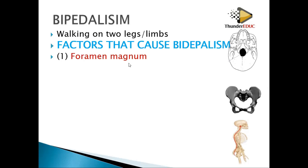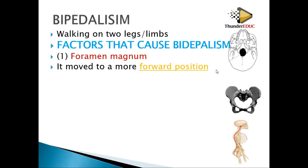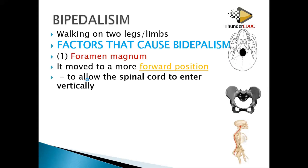If they are walking on four limbs, it's quadrupedal. If you are bipedal, the foramen magnum moves to a more forward position. This allows the spinal cord to enter vertically, as seen in the diagram where the spinal cord enters directly into the head, making the person walk upright.